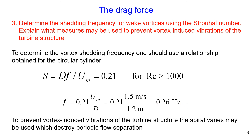To prevent vortex-induced vibrations of the turbine structure we can use spiral vanes, which will destroy the periodic flow separations.